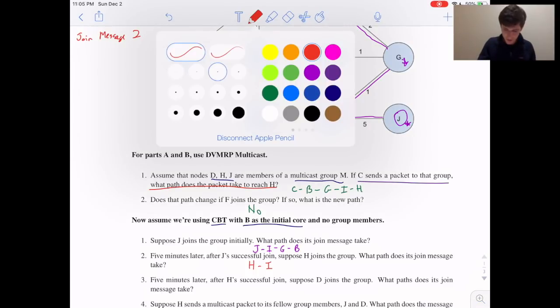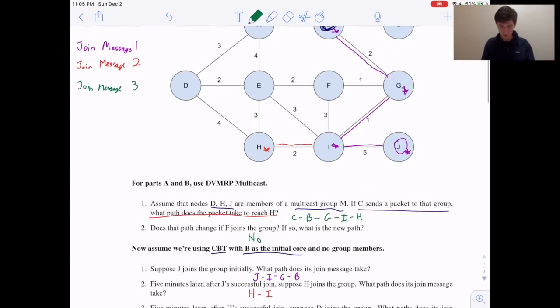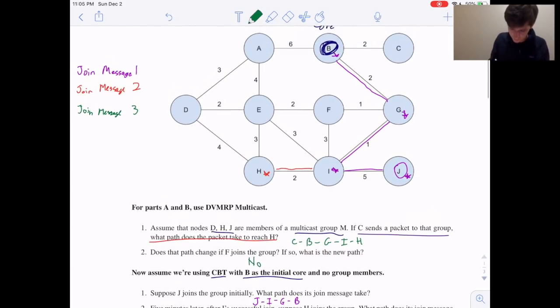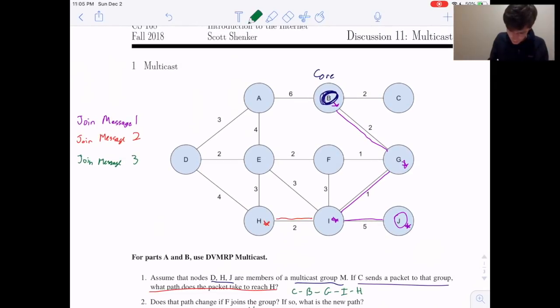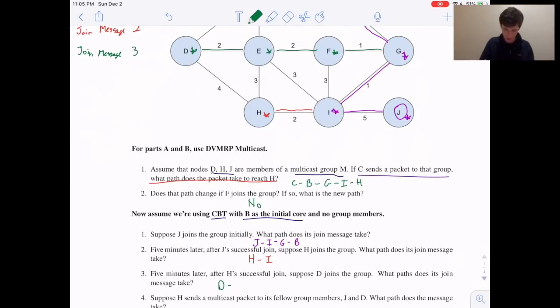Now in part three, D wants to join, which we'll do in green. So join message three. D now wants to join. So D will send a packet to the core, to B. D sends to E, E sends to F, F sends to G. And G is already a member of this tree that we have for this group. So the packet stops there. D, E, F, G.